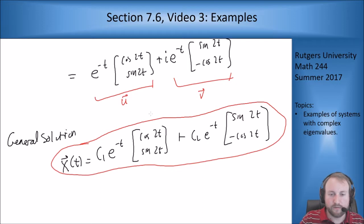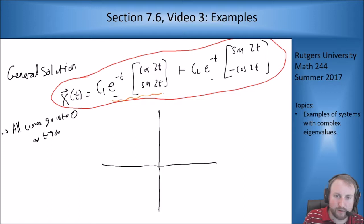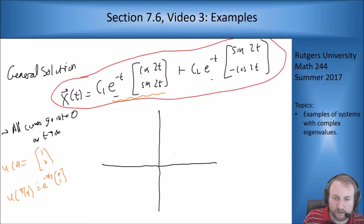So now let's draw our phase portrait for this one. So if I look at my first solution here, well first of all I notice all curves are going into 0. All curves go into 0 as t goes to infinity. And that comes from the fact that I have an e to the minus t here and e to the minus t here. So if I look at my first solution at t equals 0, so u of 0 is 1 times 1, 0 and u of pi over 4 is going to be e to the minus pi over 4, 0, 1. So it's going to start here and it's going to go up to 0, 1 and then kind of do one of those numbers. And then it's going to do this out the other side.